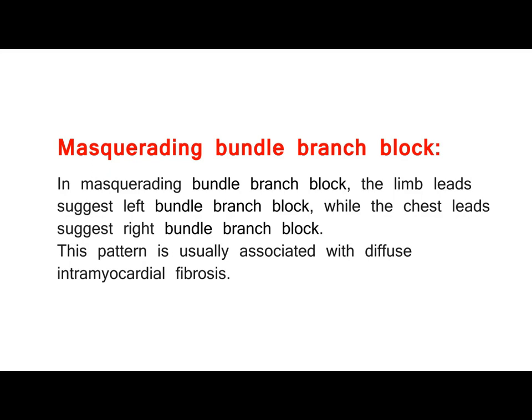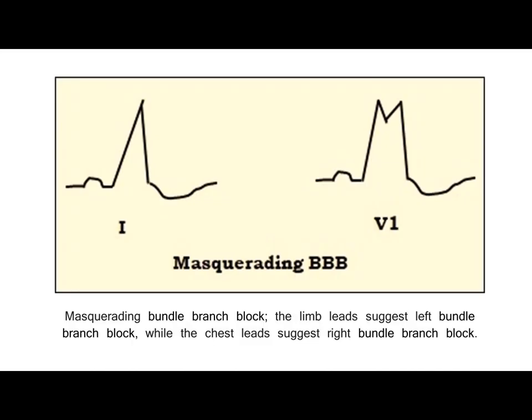In masquerading bundle branch block, the limb leads suggest left bundle branch block while the chest leads suggest right bundle branch block. This pattern is usually associated with diffuse intramyocardial fibrosis.